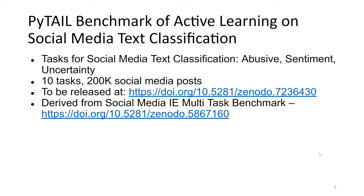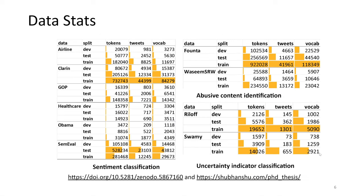The dataset will be released publicly at the given URL and is derived from the social media, i.e., multitask benchmark. In terms of the dataset statistics, we have six specific datasets for sentiment classification, two for abuse identification, and two for uncertainty quantification.